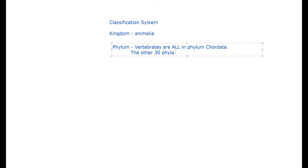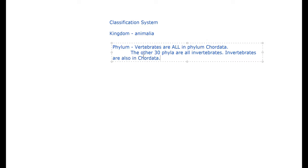This week we are going to be going over many different phyla, because vertebrates are only in one phylum. Vertebrates are all in phylum Chordata. The other 30-plus phyla are all invertebrates — well, invertebrates also appear in Chordata, but they have many of their own phyla, which is super neat. That is basically what we're going to be looking at this week: all the different phyla invertebrates are a part of, how many species are in each one, and their characteristics.